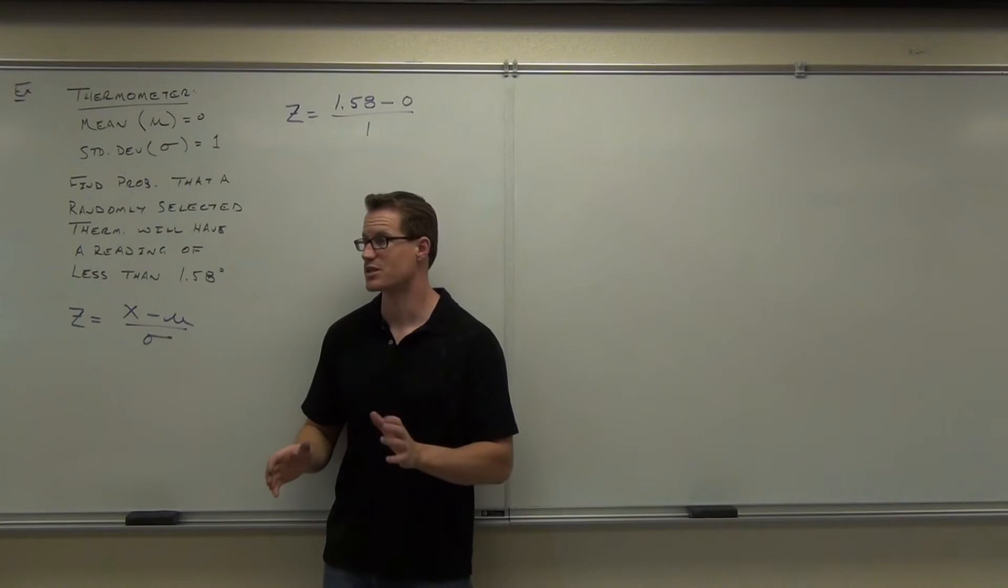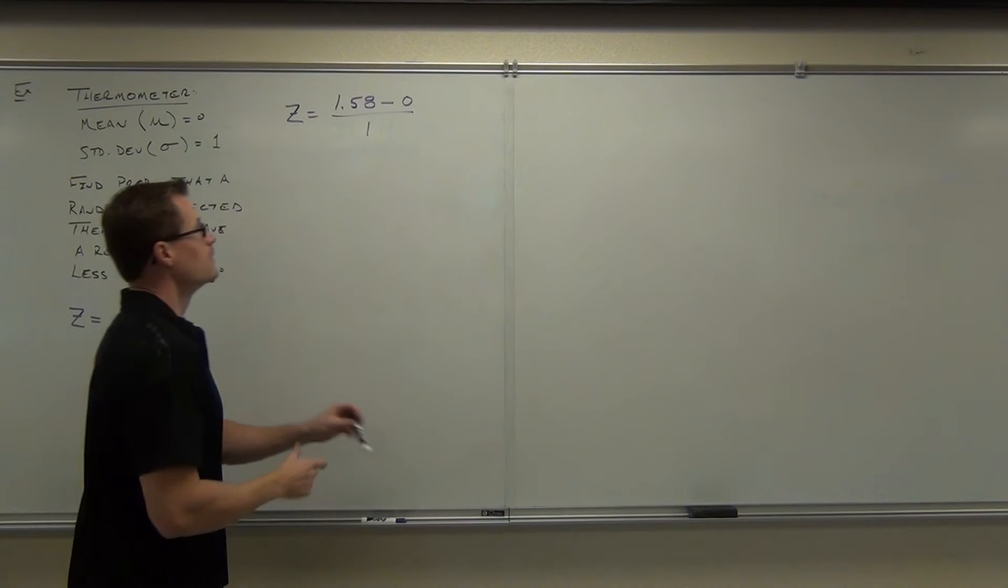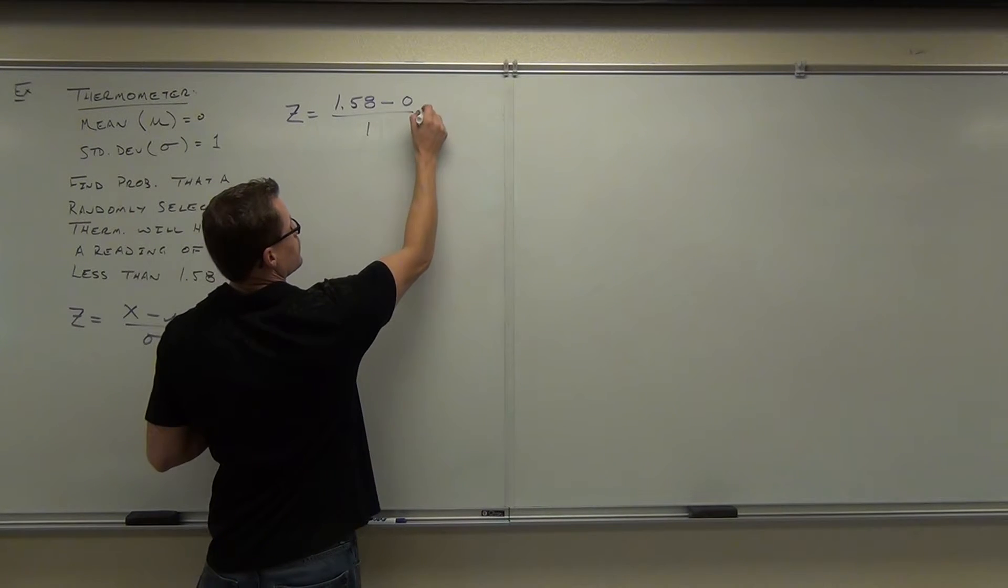Most times our mean is 0, most times our standard deviation is 1. We have to change it using the z-score. Here, of course, our z-score is 1.58.